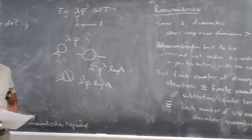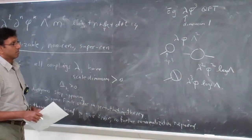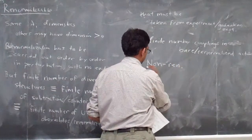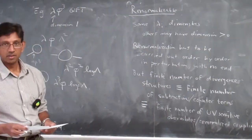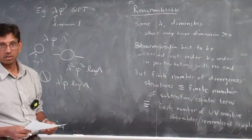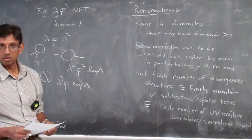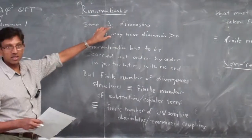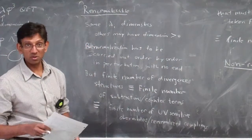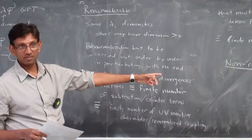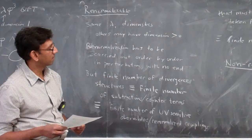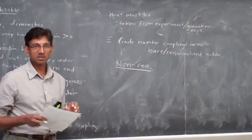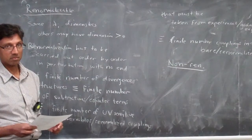These counterterms are an accounting tool. Ultimately what it's saying physically is that there are a finite number of UV sensitivities in your theory. You're never going to calculate them from nothing — you must go and measure them, or take them as input as a theorist. A student asked: when you say a finite number of couplings in the bare action, can't the bare action have finitely many terms but if it's non-renormalizable you get an infinite number? Yes, that's exactly what I'm coming to.